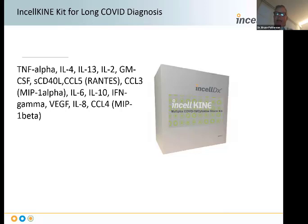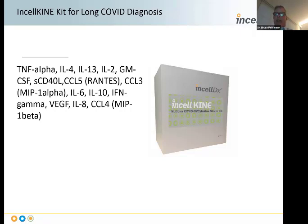We identified through machine learning who had a pattern of long COVID. That came about because we had studied CCR5 antagonists in acute COVID and followed these patients over 30, 60, and 90 days. Although they were better and they didn't die, their immune systems were by no stretch of the imagination normal at 30, 60, and 90 days—and they were abnormal in a very different way than acute COVID.